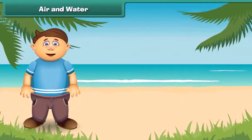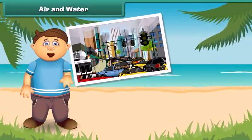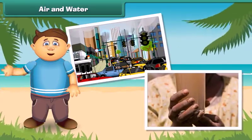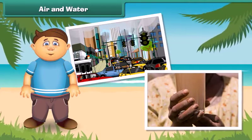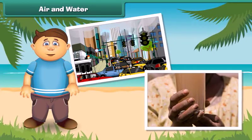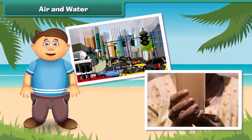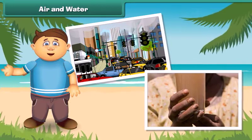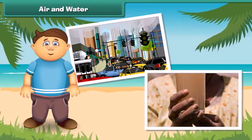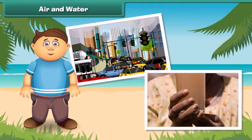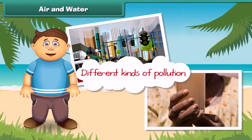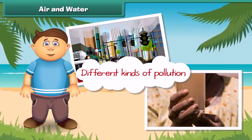As we all know, air and water mainly support life on the earth. But now these two are getting dirty day by day. As a result, there is no fresh air to breathe and clean water to drink. So let us discuss in detail different kinds of pollution.